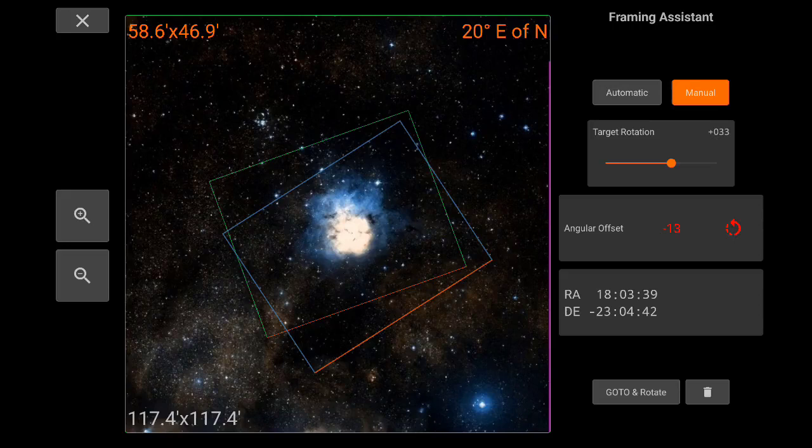On the other hand, the blue one is the target. If we leave the framing assistant in manual mode regarding the rotation, then it will just tell you the angular offset. Now we see it as negative 13. And then you need to go and adjust your camera manually and click again go to and rotate until this value becomes zero.